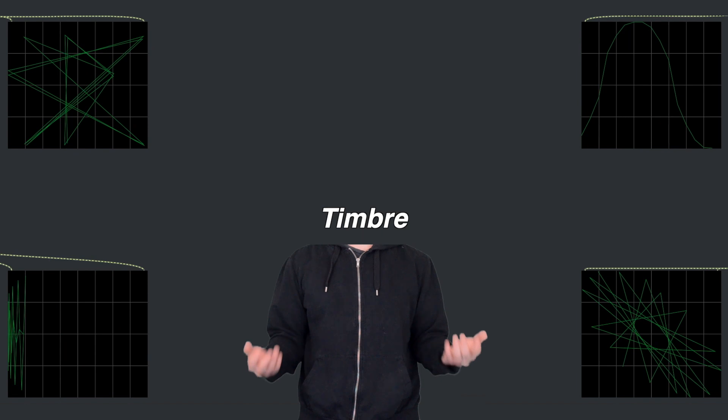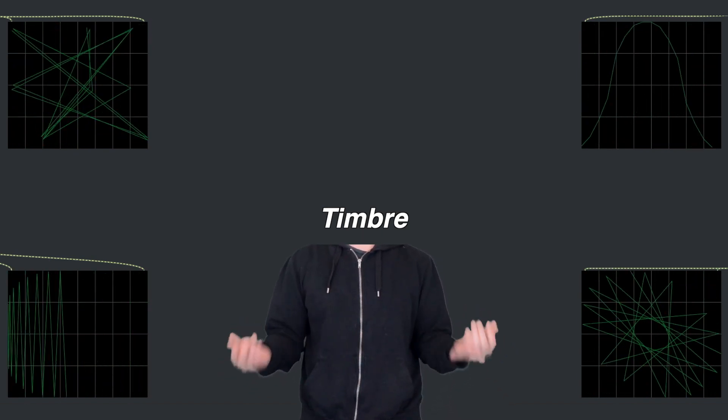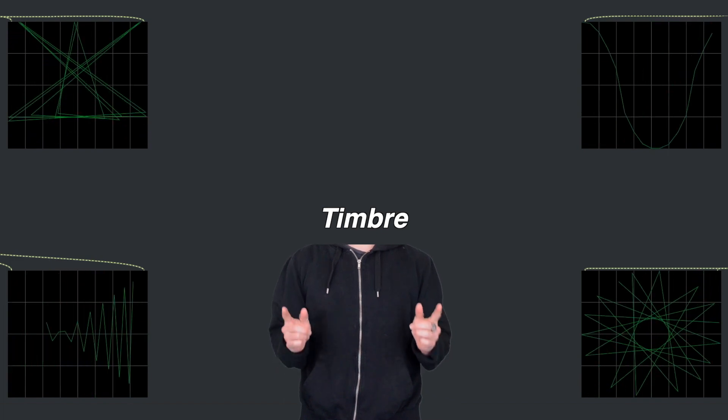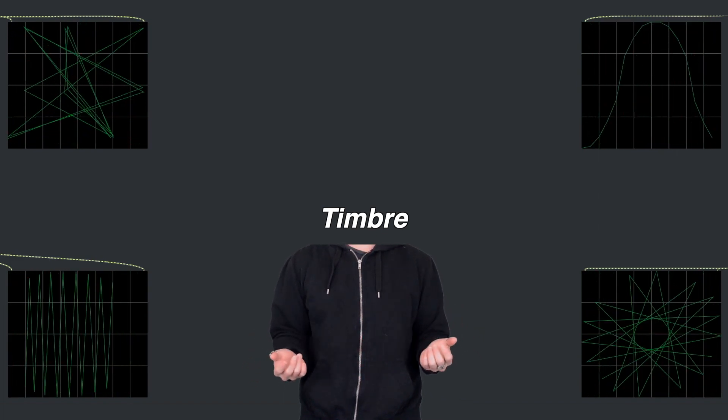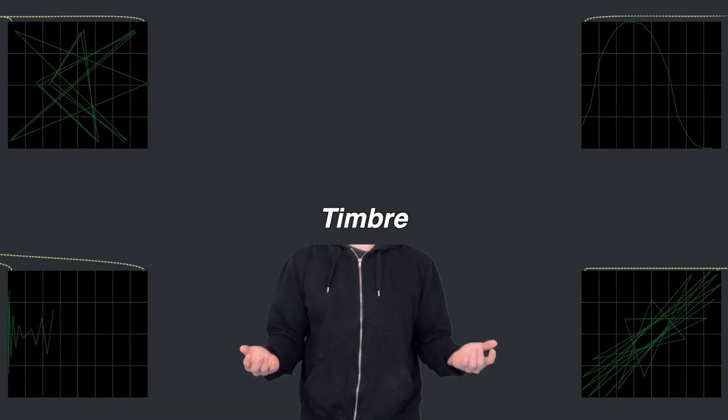As we covered in the additive synthesis video, timbre, or the distinct quality of a sound, is determined by the frequency contents of a sound. Timbre is what allows us to distinguish between a guitar and a piano.